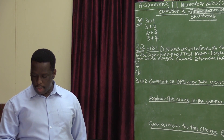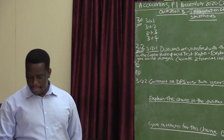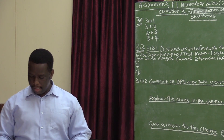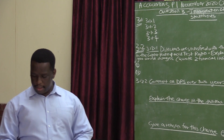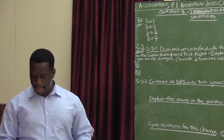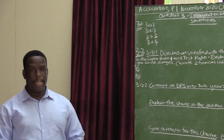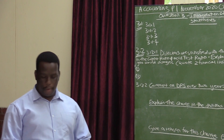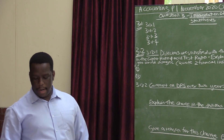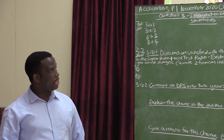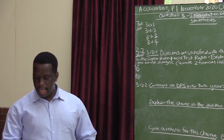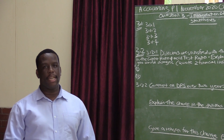Question 3.1 says: choose the question from column B that matches a category of financial indicators in column A. Write only the letter A to E next to the question numbers 3.1.1 to 3.1.4 in the answer book. So we have 4 questions here and there are 4 accounting concepts: liquidity, risk and gearing, return to shareholders, and operating efficiency.